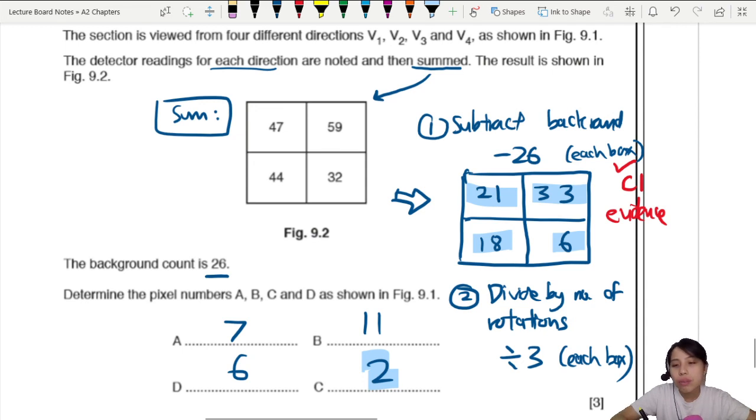Then the second one is if you divide by three or show evidence that you divided by three, make sure evidence is as clear as possible. That's your second mark. The final one is an A1 mark if all four pixel numbers are correct. Seven, six, eleven, two.